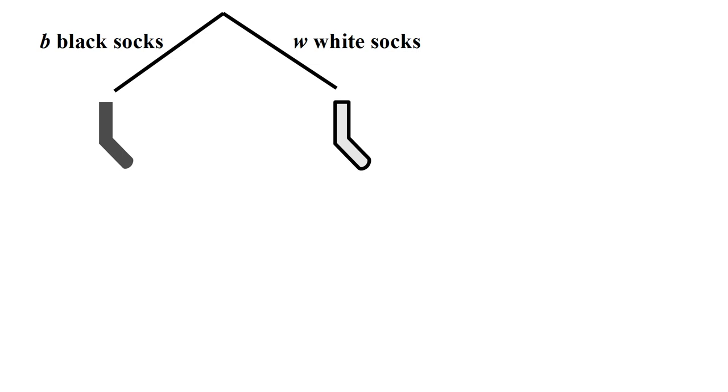Suppose you drew a black sock. On the next draw, you could draw another black sock. Since you've already pulled out one black sock from the drawer, there is one fewer black sock remaining. So there are B-1 black socks that this could have been from. If we multiply these two numbers, B times B-1, we get the total number of ways that we could have drawn two black socks in a row.